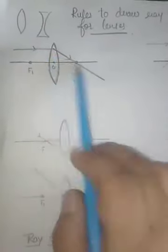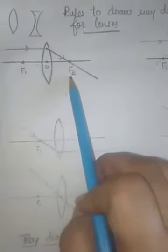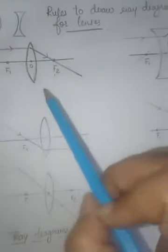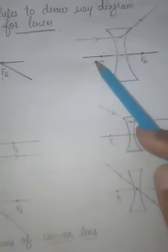The first rule is that a ray coming parallel to the principal axis passes through the focus on the other side. There are two focuses, f1 and f2, in the convex lens. In the concave lens, which is a diverging lens, a ray coming parallel to the principal axis diverges and appears to pass through focus f1 in dotted form.